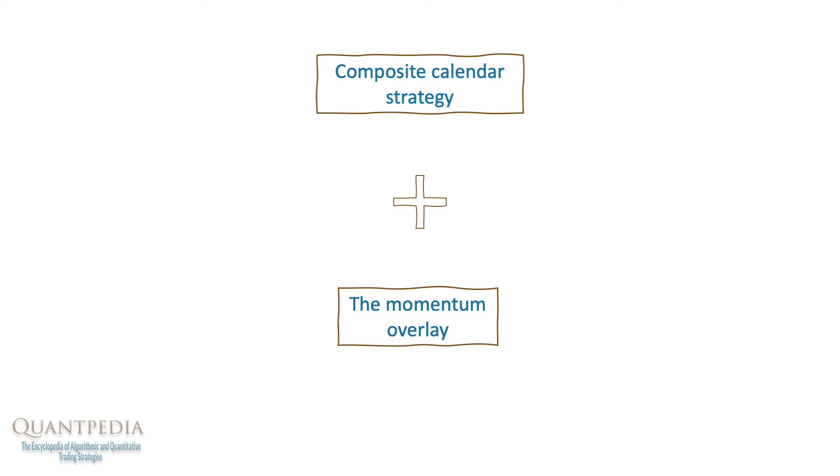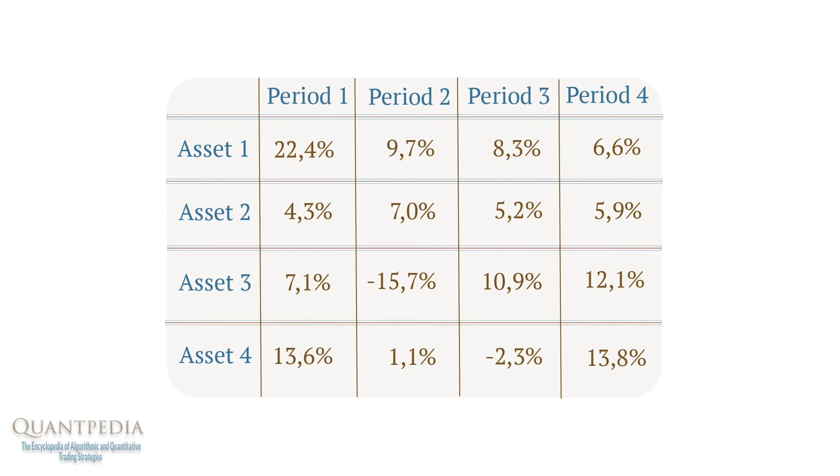This idea of combining momentum strategy with the composite calendar strategy could be easily understood. During the given days, there is a price pressure upwards because a lot of market participants are rebalancing their positions. So it seems natural to invest in assets that appear to be the most profitable in recent times, also in the belief that the assets would continue performing well.